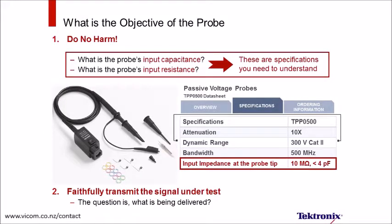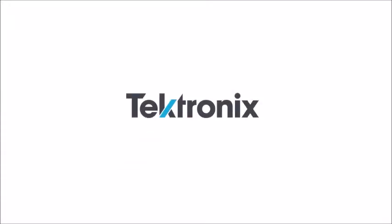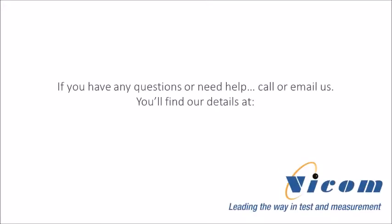When selecting a probe, users will often look at what are considered the banner specifications — bandwidth and dynamic range. As you've seen in this video, the probe's input capacitance is a critical specification. A probe with less input capacitance will do less harm or cause less loading on the test signal, which will offer measurements with greater accuracy. Find out more at FICOM's website.